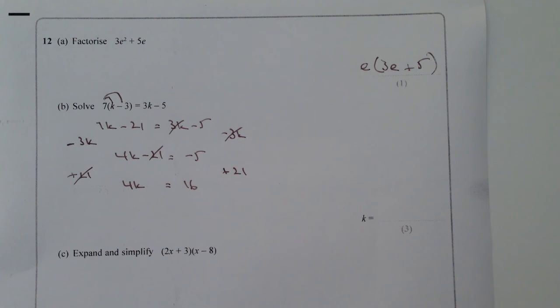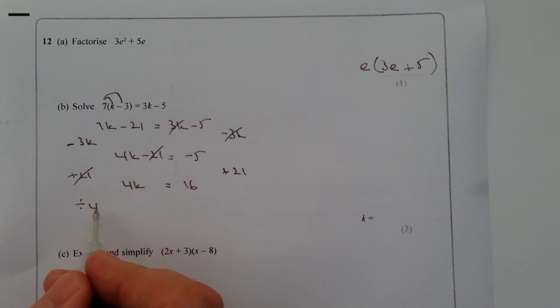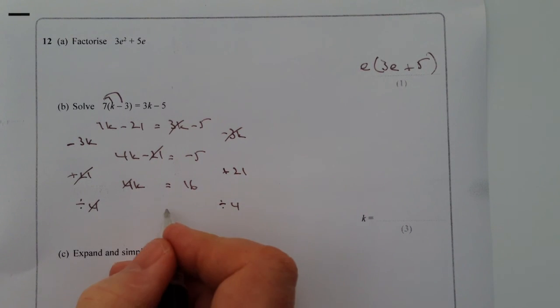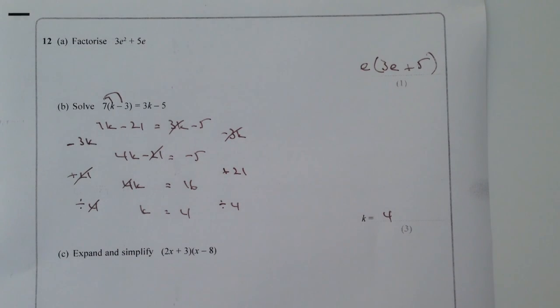So we know that 4 times the value of k equals 16. Well, in order to find the value of k, what I'm going to do now is just divide through by 4, because 4 divided by 4 means I get k on its own. And then I have to do it to both sides. So 16 divided by 4 equals 4. So k equals 4 in this particular question.